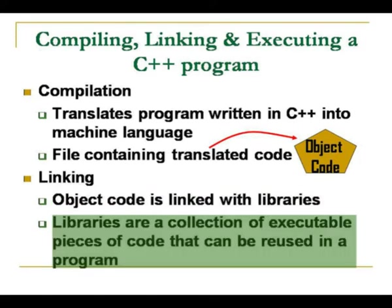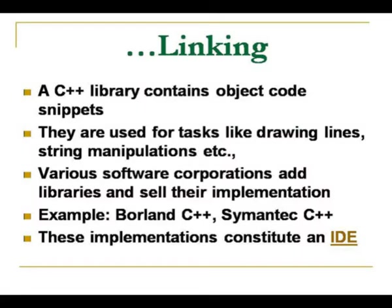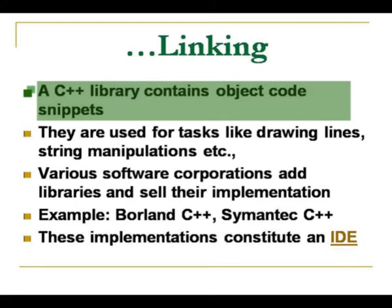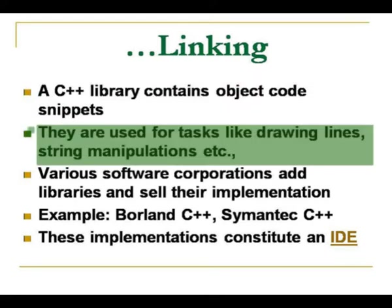Linking is connecting the program with libraries. Libraries are a collection of executable pieces of code that can be reused in a program. For example, string functions like string compare and string cat have already been defined in the C++ library. When you use the string cat function, the compiler needs to know it is used for concatenation — that definition is in the C++ library. These libraries can be reused any number of times in the same or other programs. The C++ library contains object code snippets, which are functions used for predefined tasks like drawing lines and string manipulations.